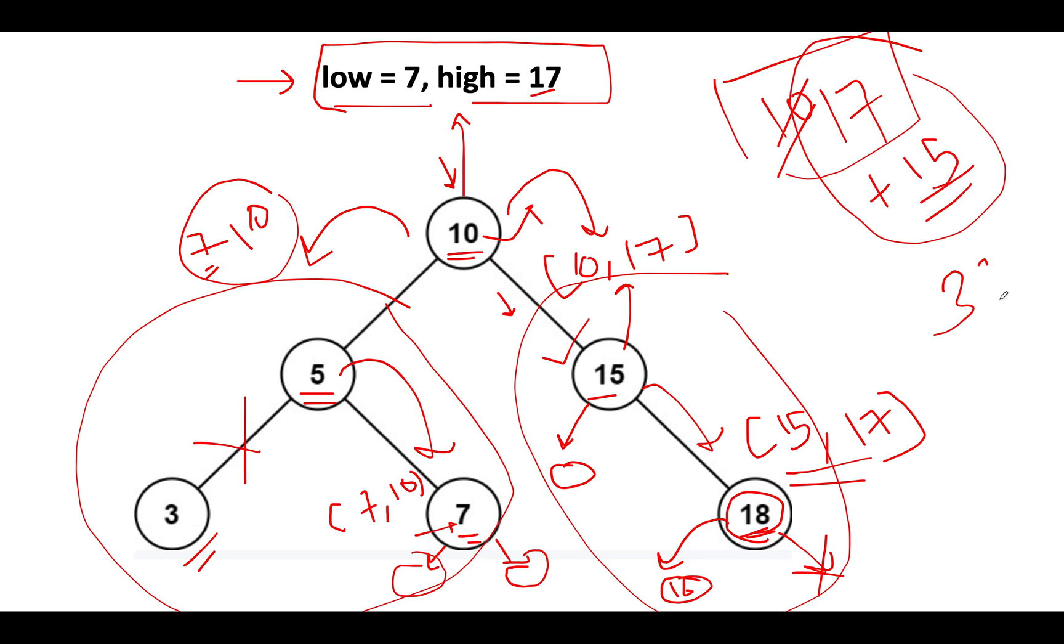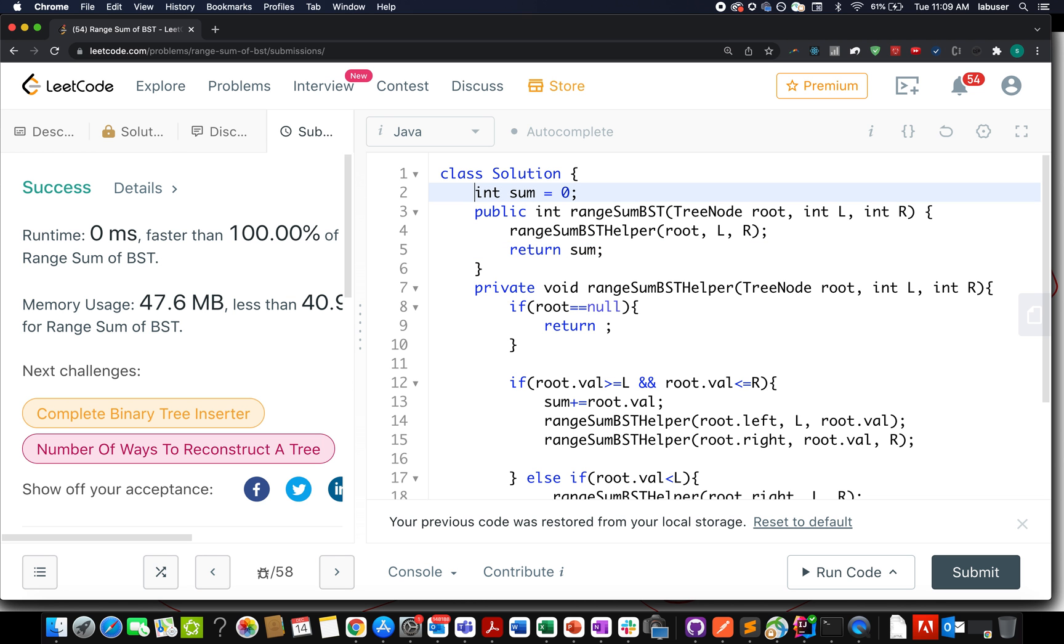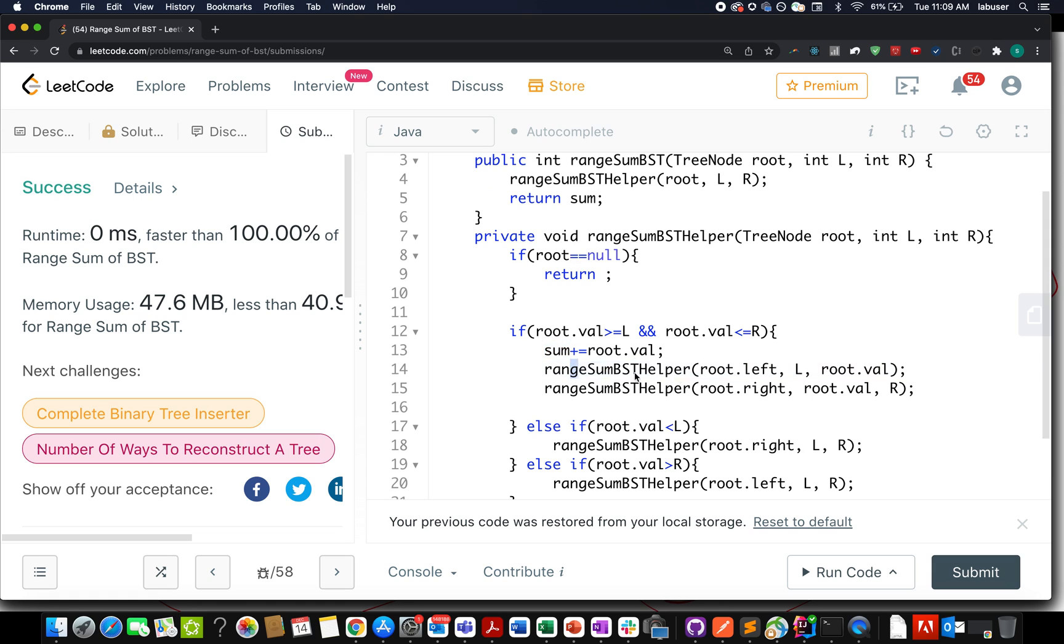So without much ado, let's look at the coding section where I have coded it up. I have taken a global variable here that will store the sum, and I have created a helper method rangeSumBSTHelper that will basically iterate over the complete binary search tree. If my root happens to be null, I simply return back. If my current root is within the range of left comma right, what do we do? I add the root's value to the global variable sum and I iterate over its left subtree and the right subtree.